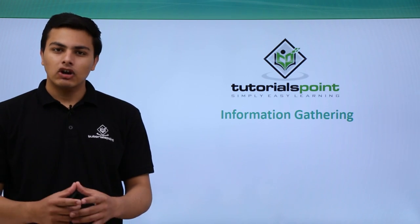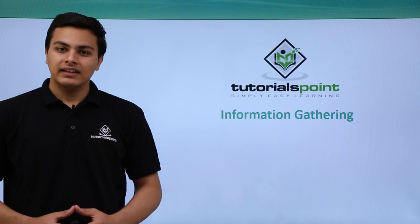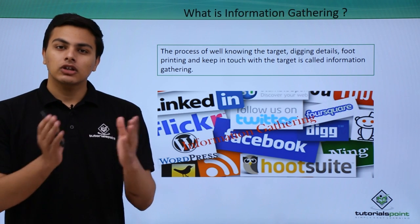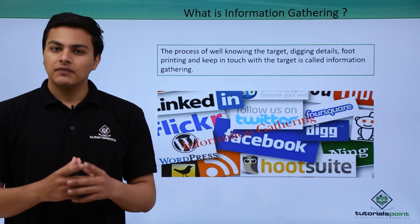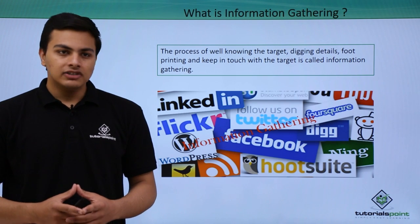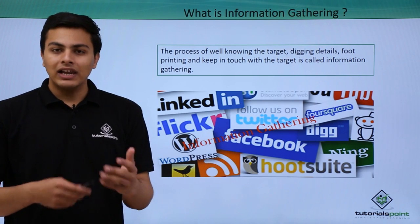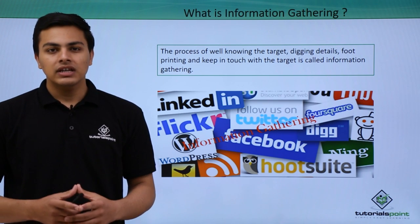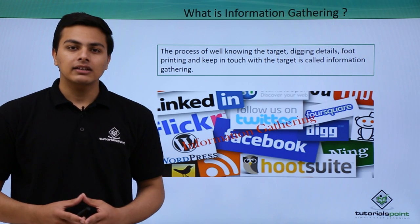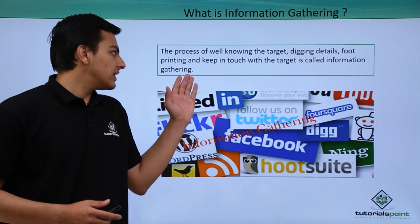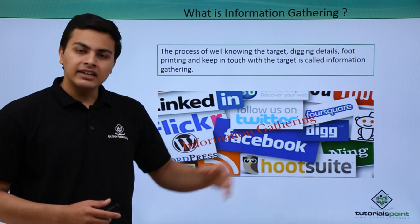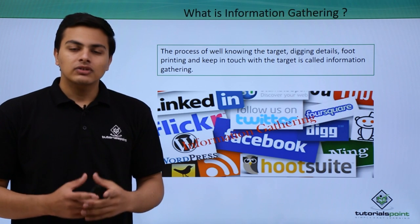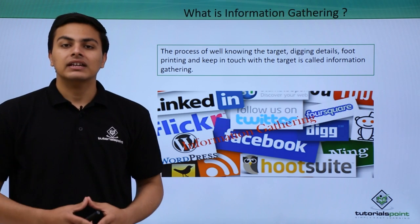Hello everyone. In this video we will talk about information gathering. Information gathering is also called reconnaissance, which is the first phase of ethical hacking. It is the process of knowing the target and finding interesting information about our target, which we can use to exploit that target in the future — digging details, footprinting, and keeping in touch with the target.